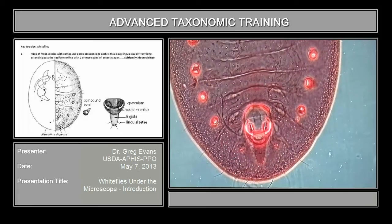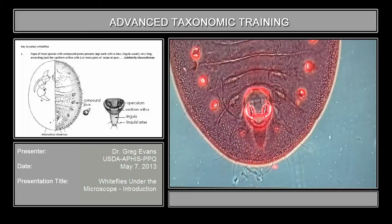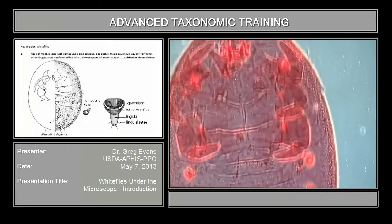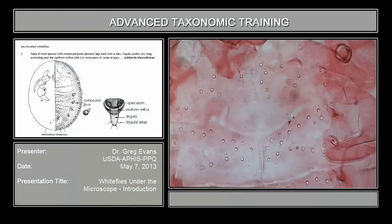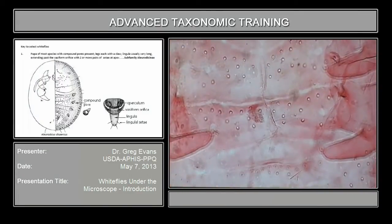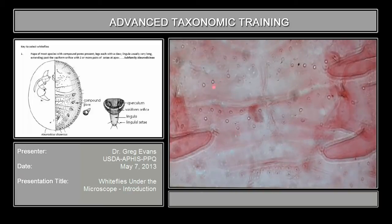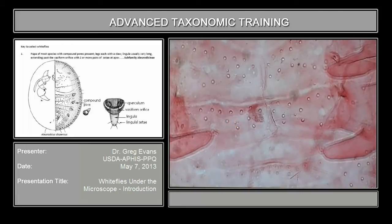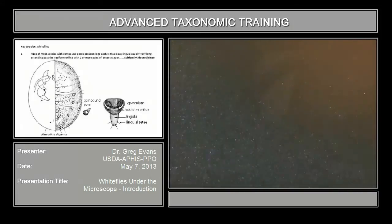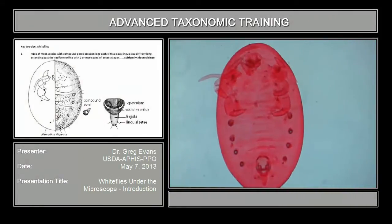These along here are the caudal setae, and along here are the sub-marginal setae. You can see some of the sub-marginal setae here. On the thorax, you can see the transverse suture here separating the thorax from the abdomen, and some pairs of setae right here. Here's the last thoracic segment with a pair of setae, and here's another pair on the second thoracic segment. Those are just some of the important characters in white flies in general.